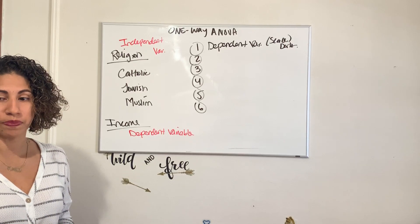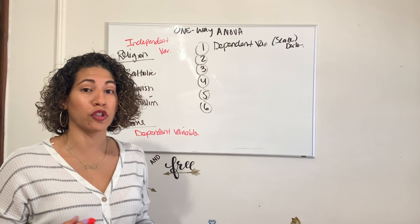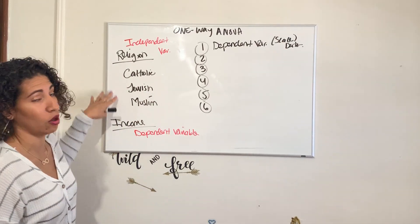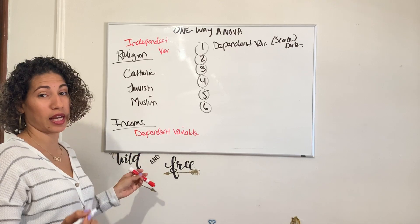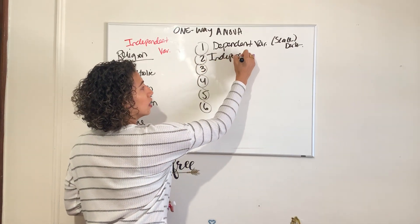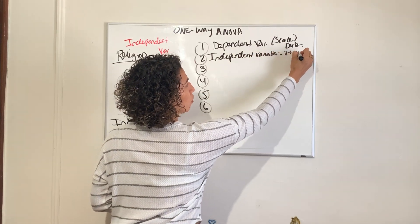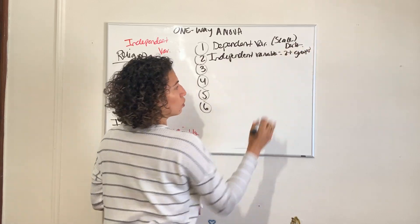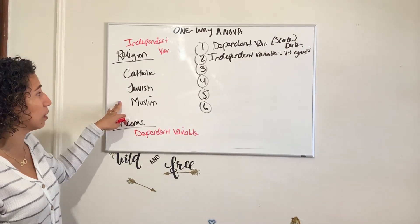Our independent variable should consist of two or more groups. Does it consist of two or more groups? Yes. So we have our second assumption completed. Our independent variable equals two or more groups, and here we definitely have two or more groups. So we met our second assumption.